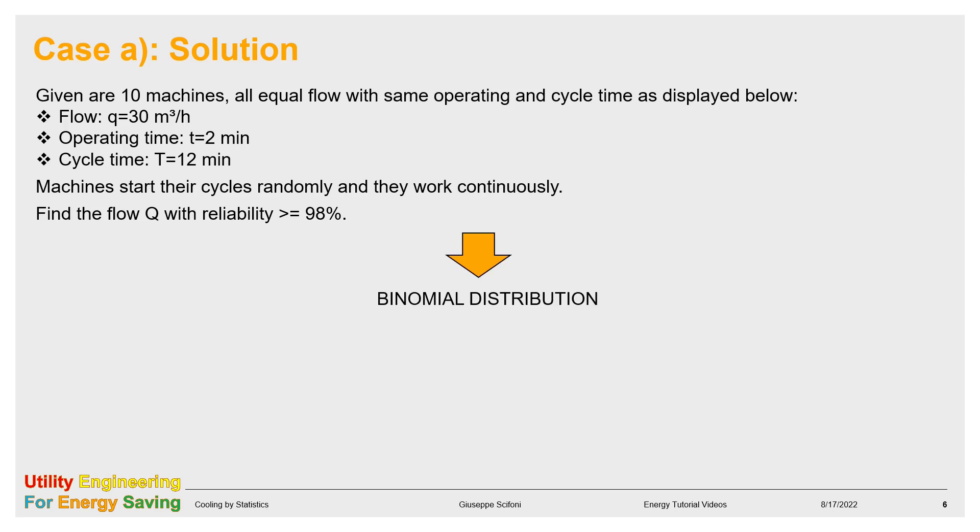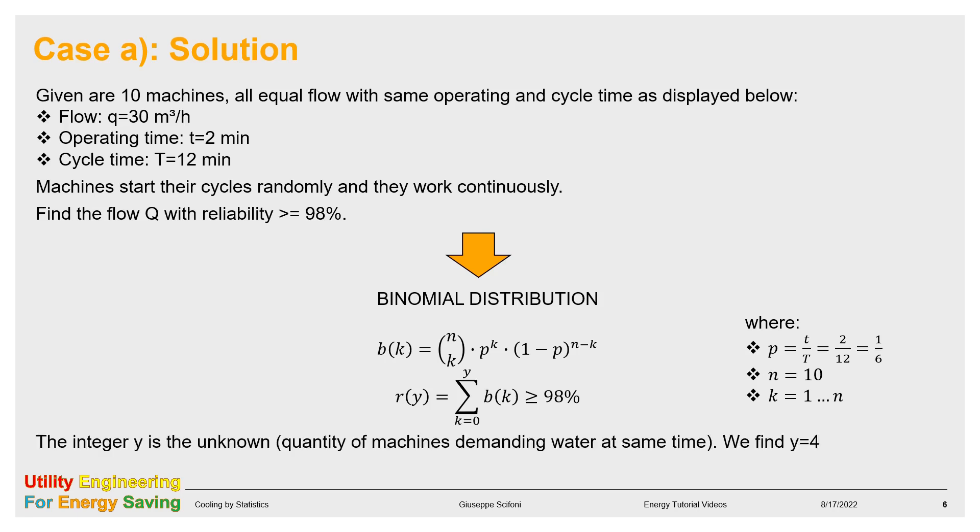The statistics describing this configuration is the binomial distribution. The probability that K machines are demanding water is given by a formula. The probability that a maximum of Y machines are demanding water is the sum of the single probability. The sum must be greater or equal to 98% as per our choice. Y is our search unknown. We find Y equal to 4 machines. Eventually, the capacity of the system is Y times Q, 120 cubic meter per hour.